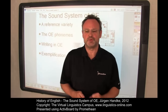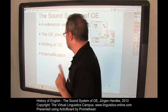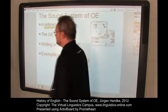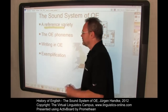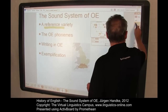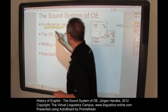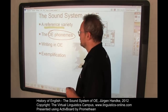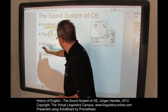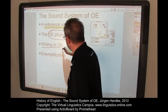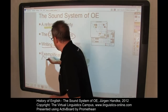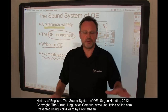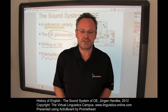This is what we will be doing. First, we will define a reference variety of Old English. Then, we will look at the Old English phonemes in detail. We will take a look at the orthography of Old English and finally try to exemplify the sounds of Old English on the basis of a written text.